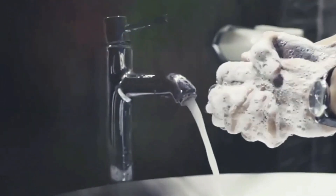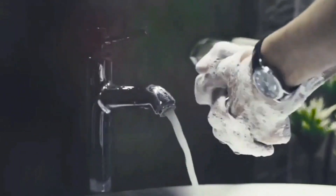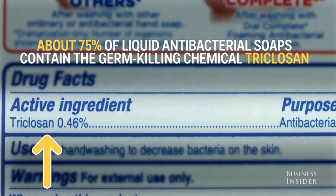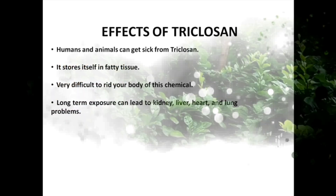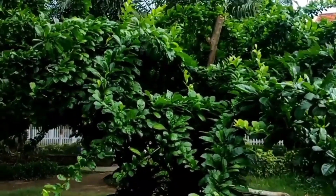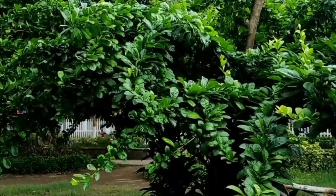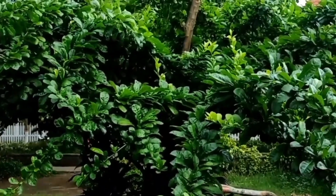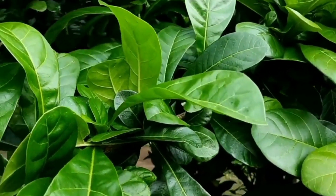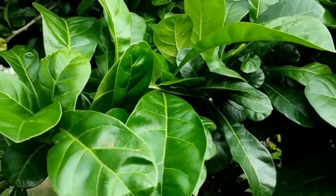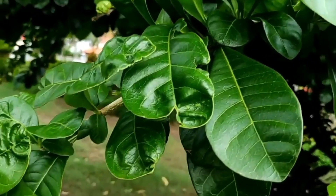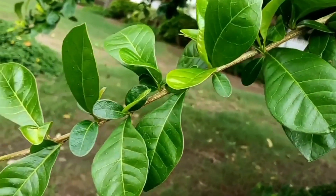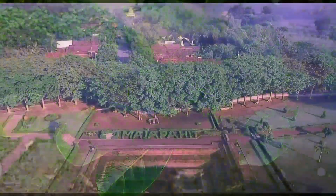Soap that can clean germs and bacteria are known as antiseptic soaps. Generally, antiseptic soaps add triclosan as an antibacterial agent. Excessive use of triclosan can have a negative impact. So we need alternative materials that can replace triclosan as an antibacterial agent, one of which is the leaf of Majapite plants. The leaves of Majapite plant contain alkaloids, saponin, and tannin that can inhibit bacterial growth.